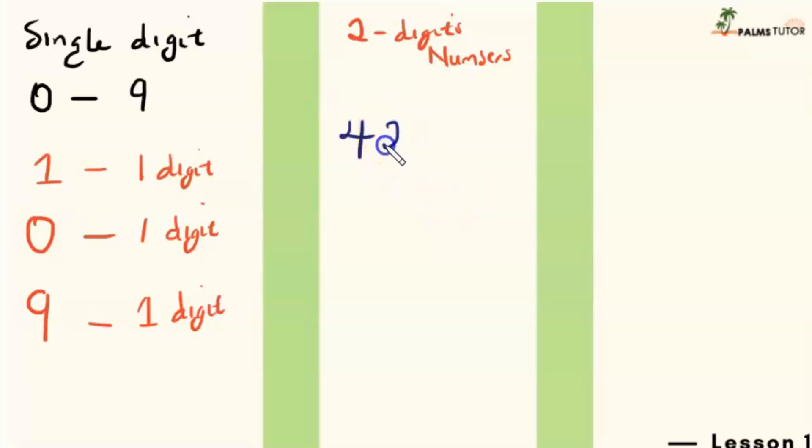So I will take four and then I can put two behind it. So we have 42. This is a two digit number. I can decide to rearrange this and let two come before four, and then it's no longer 42, it's 24.